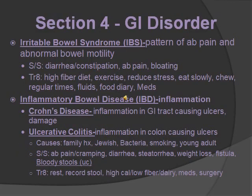IBS and IBD: irritable bowel syndrome and inflammatory bowel disease. Irritable bowel syndrome — something is irritating the bowel — so you're going to have abdominal pain, abnormal bowel motility like diarrhea or constipation or both, and bloating. Treatments: high-fiber diet, exercise, reduce stress, eat and chew slowly, eat at regular times, fluids, keep a food diary to see what's triggering you, and medications like antidiarrheals and antispasmodics.